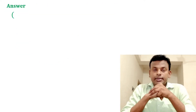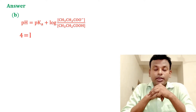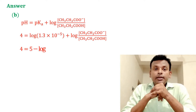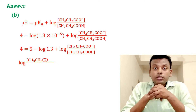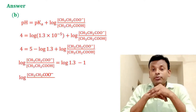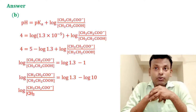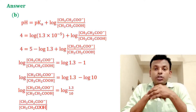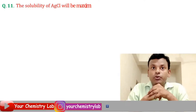Answer is option B. Using the Henderson equation: pH equals pKa plus log([CH3CH2COO⁻]/[CH3CH2COOH]). Putting in pH = 4 and pKa and calculating, the ratio of [CH3CH2COO⁻] to [CH3CH2COOH] equals 0.13. So option B is the correct answer.